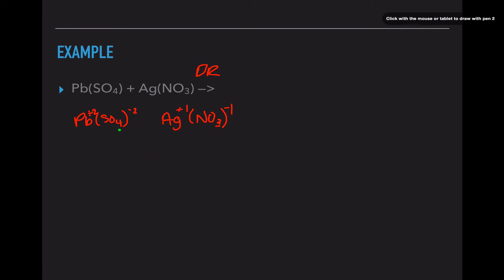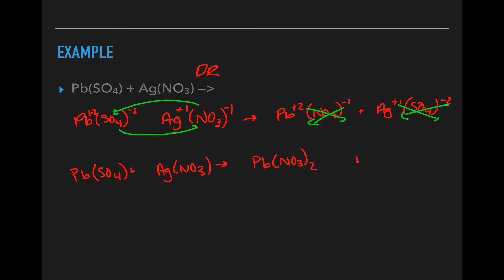Now we're going to take the endings and switch the endings. So after the arrow, I'm going to write Pb with a plus 2, NO3 with a minus 1, plus Ag with a plus 1, and SO4 with a minus 2. Now, crisscross your oxidation numbers down. And I'm going to rewrite the whole thing. So I'm going to write Pb(SO4) plus Ag(NO3) yields Pb(NO3)2, because I crisscrossed that 2 down, plus Ag2(SO4), because I crisscrossed this one down.